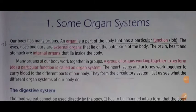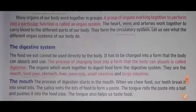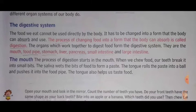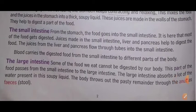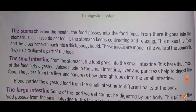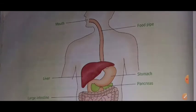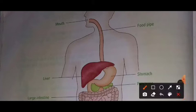Good morning students, welcome to your EBS class. We are studying chapter 1, some organ systems, in which I have explained the different types of organs — external organs and internal organs. I have given examples of some organ systems in which we discussed the digestive system. In the digestive system we saw the mouth, the food pipe, and the stomach. Today we will see the next topic, which is the small intestine.